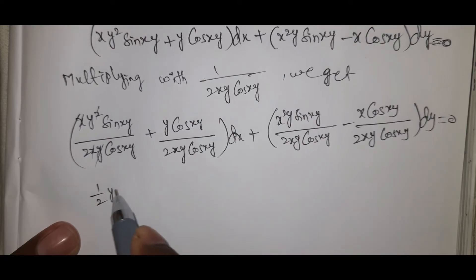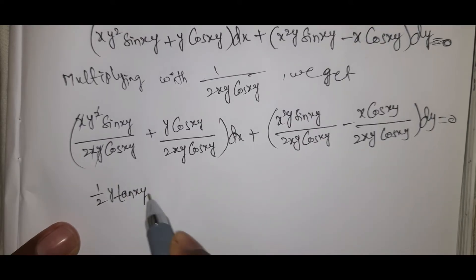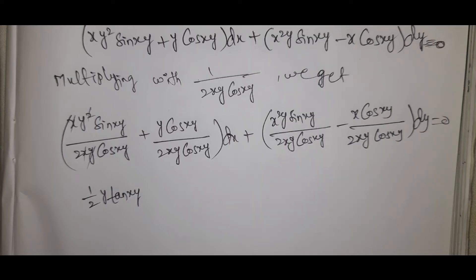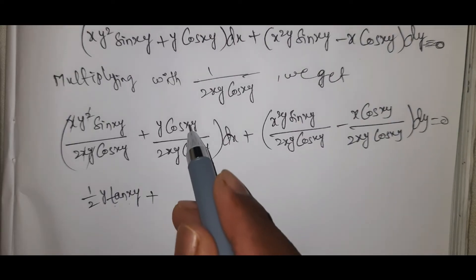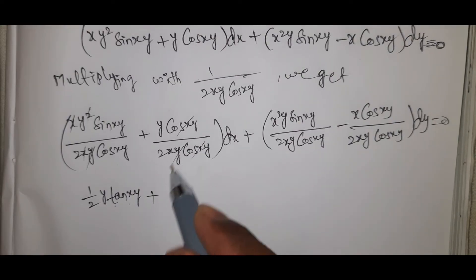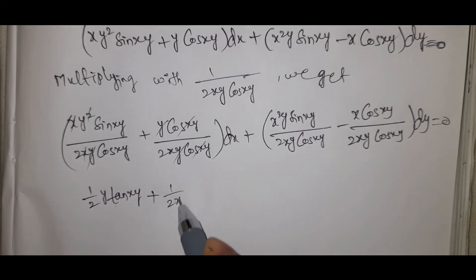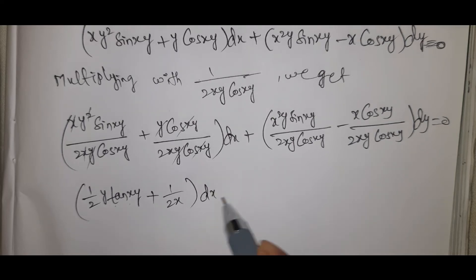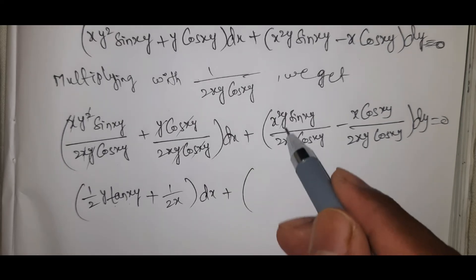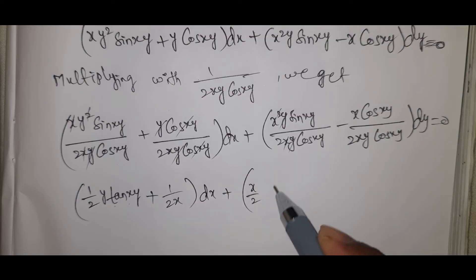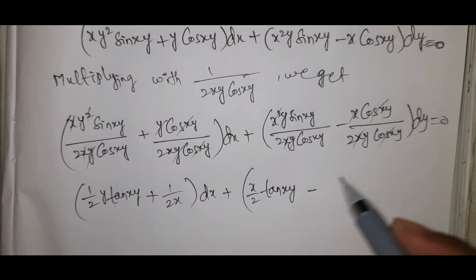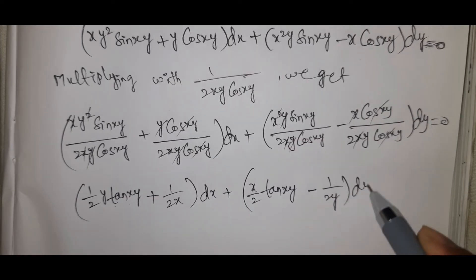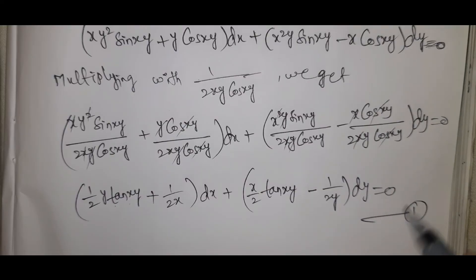After cancellation, we get: (1/2)y·tan(xy) plus 1/(2x) for the dx term. For dy: sin/cos gives tan(xy), so (1/2x)·tan(xy), and after cancellations, minus 1/(2y). The resulting equation is: [(1/2y)·tan(xy) + 1/(2x)]dx + [(1/(2x))·tan(xy) − 1/(2y)]dy = 0. This is equation number 1.